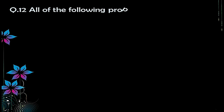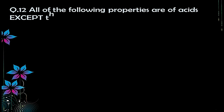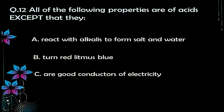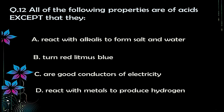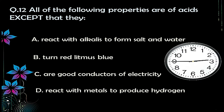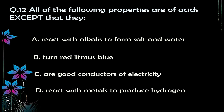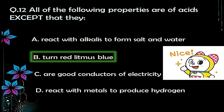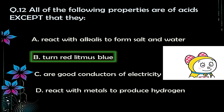Question number twelve: all of the following properties are of acids except — A) react with alkalis to form salt and water, B) turn red litmus blue, C) are good conductors of electricity, D) react with metals to produce hydrogen. The correct answer is option B — turn red litmus blue — because acids turn blue litmus red; it is a property of bases to turn red litmus paper blue.